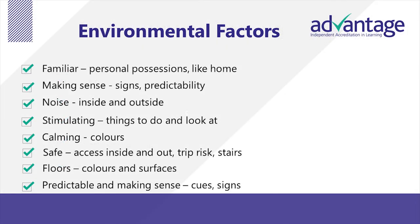I want to mention some of the environmental factors that need to be considered when caring for a person with dementia. You need to consider the familiar — personal possessions and things in the home. You need to consider things that make sense, that offer signs and predictability. You need to think about noise, both inside and outside, about stimulating activities and things to do and look at, but also about calming things such as colours. You need to look at safety, access inside and out, trip risks and stairs. You need to think about floors — whether that be the colour or the type of surface — and predictable things that offer cues and signs.